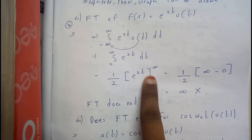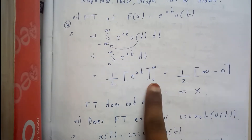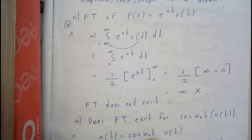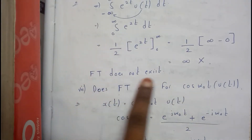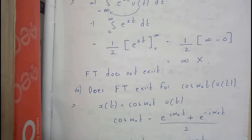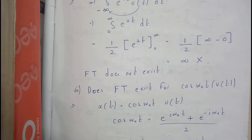We get (1/2) e^(2t) evaluated from 0 to infinity, and we managed to get infinity. So for this, the Fourier transform does not exist — you can just say that the Fourier transform does not exist for this function.